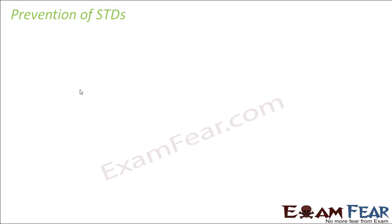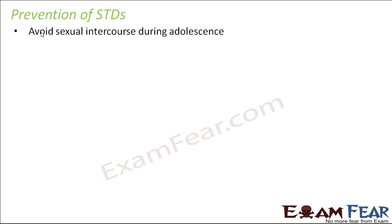It is very important that sexually transmitted diseases should be prevented. One way to prevent them is to avoid sexual intercourse during adolescence, because during adolescence there are already so many changes taking place inside your body as you enter a new phase of life. You are no more in childhood or the juvenile phase, so give some time to your body so that your reproductive tissues can grow in a proper way.